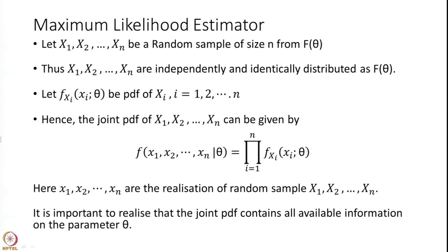Let x1, x2, ..., xn be a random sample of size n from the unknown population distribution where only the parameter theta is unknown. Thus x1, x2, ..., xn are independently and identically distributed as f(theta). If f(Xi, xi, theta) is the PDF of the random variable Xi, where i varies from 1 to n — a typical element or a typical member of a random sample — it has a probability density function as f(xi | theta).